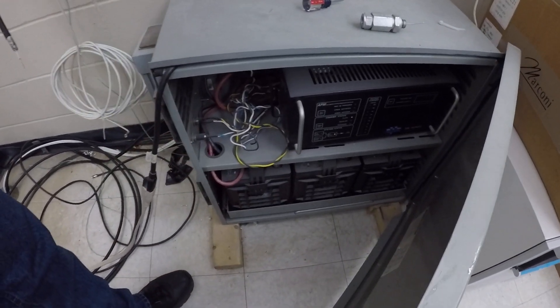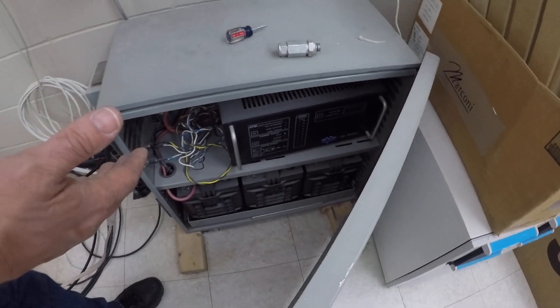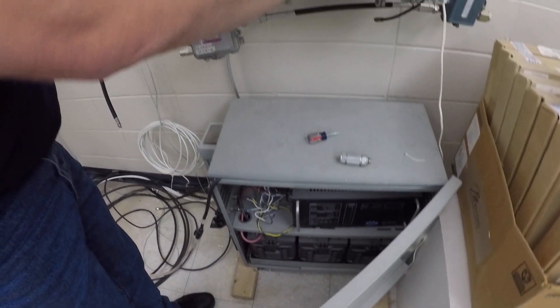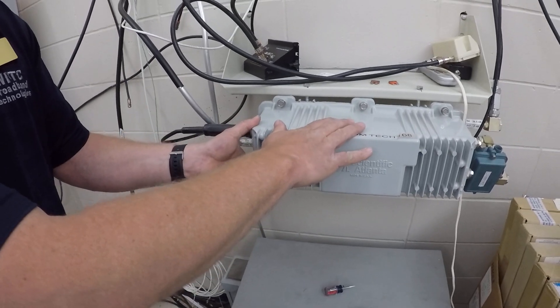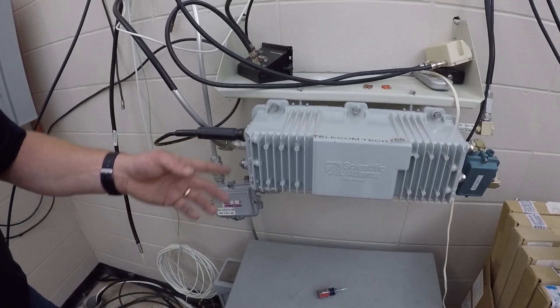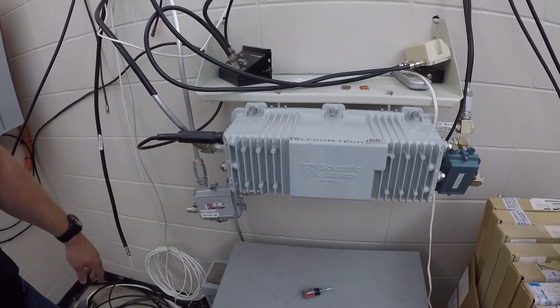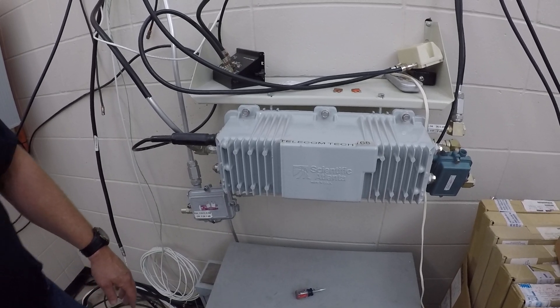Okay, so if the power goes down, the battery backups kick into place. That provides power to the node. Okay, the node then once again converts from light signals to electrical.